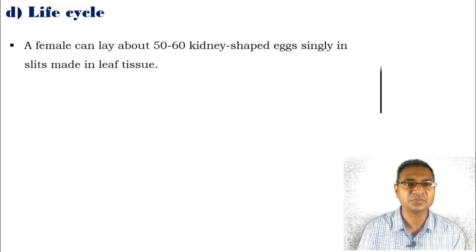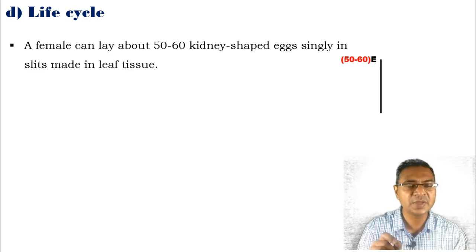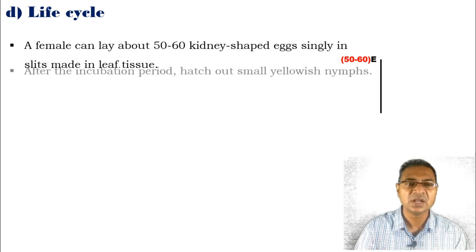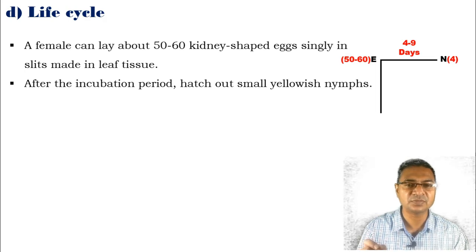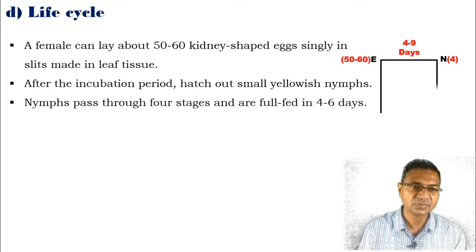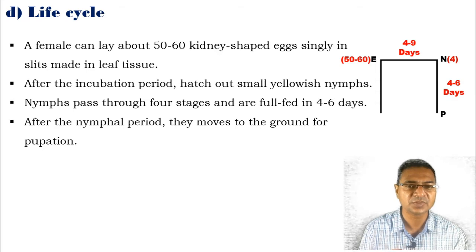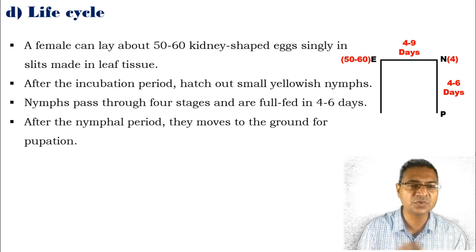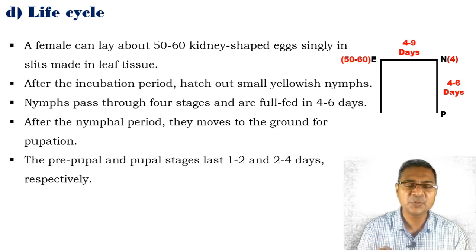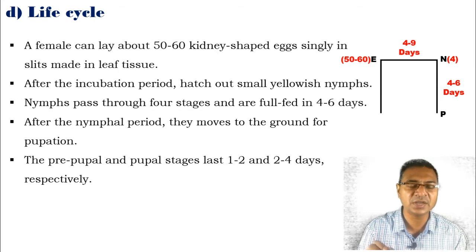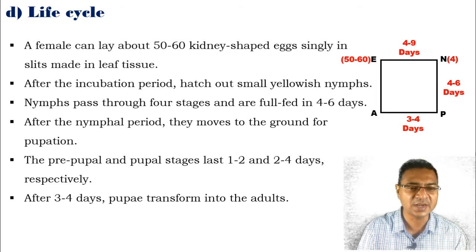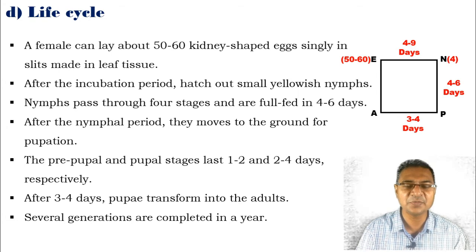The life cycle: after mating, a female can lay about 50 to 60 kidney-shaped eggs singly in slits formed by the piercing and sucking mouthparts, specially in the leaf tissues. After an incubation period of four to nine days, small yellowish nymphs hatch out. The nymphs pass through four developmental stages, fulfilled in four to six days. The nymph then moves toward the ground for pupation. In the pupal stage, two stages are present: pre-pupa and late pupa. Pre-pupa lasts up to one to two days, while late pupa takes two to four days for development. After that, it moves into the adult stage. Several generations are completed in a year.